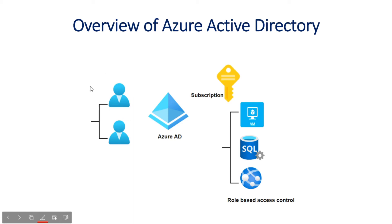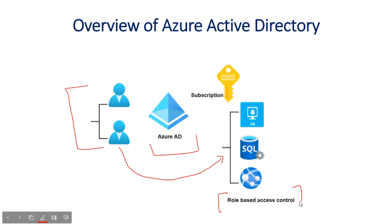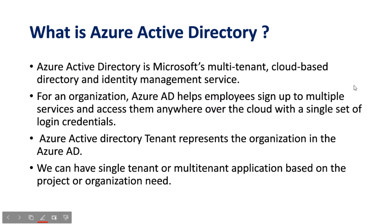We have users as part of this particular Azure Active Directory, and we want to give permission to these users on particular resources — Azure Virtual Machines, SQL Server, Azure Web — so with the help of role-based access control we give permissions to these users on these resources. The benefit of Azure Active Directory is you don't need to manage or build any infrastructure; everything is managed by Azure itself. You just create users and groups and assign permissions with role-based access control.